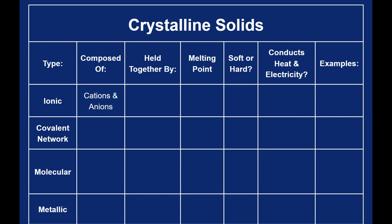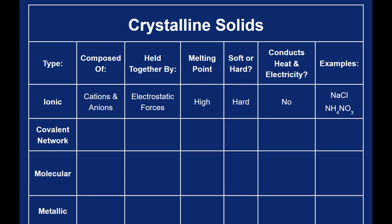Let's get to this chart. Ionic solids are composed of cations and anions. They're held together by these electrostatic forces, these coulombic forces. They have relatively high melting points. They're very rigid crystals. As a solid, they do not conduct heat or electricity. They do when they're aqueous, but not as a solid. And any ionic compound you can think of would fall under this category.